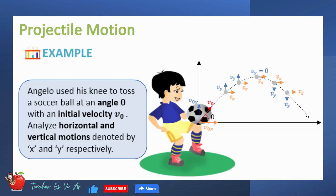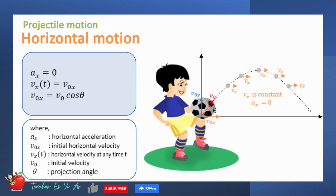To understand this clearly, consider this example. Angelo used his knee to toss a soccer ball at an angle theta with an initial velocity of v sub o. The soccer ball followed the trajectory shown in the figure. Let us analyze the horizontal and vertical motions of the ball, denoted by x and y respectively. We can see that the horizontal velocity v of the ball at any time t is the same as the initial horizontal velocity v sub o x. This means that the horizontal speed and direction never change, hence the horizontal acceleration a is zero.